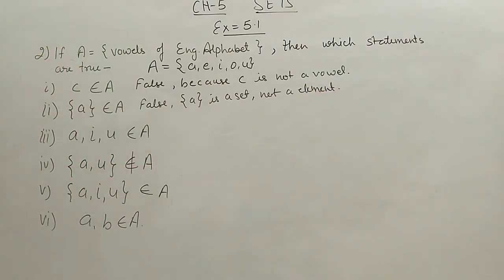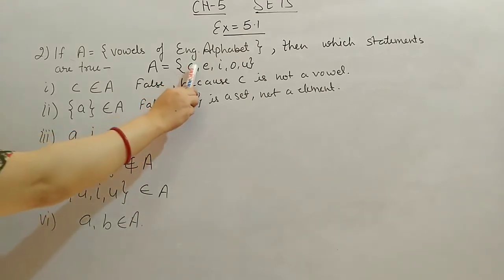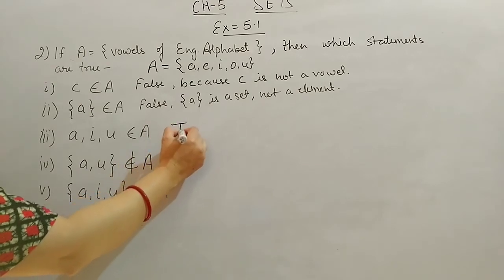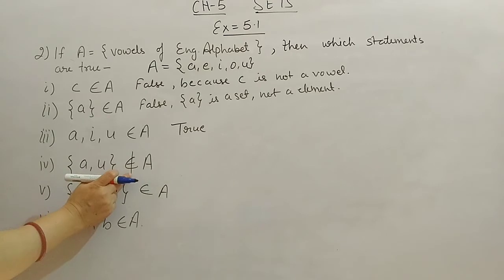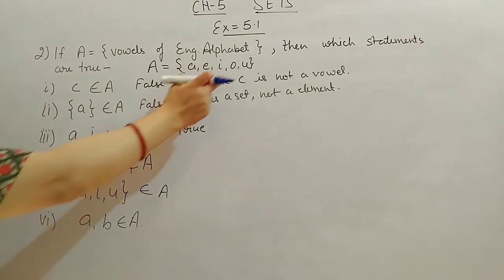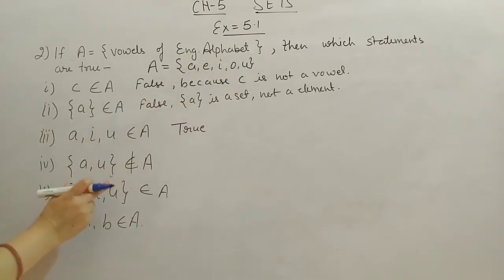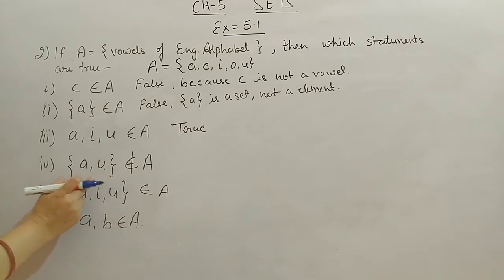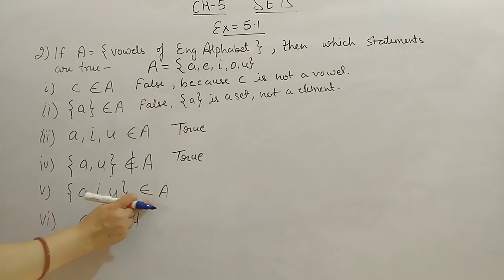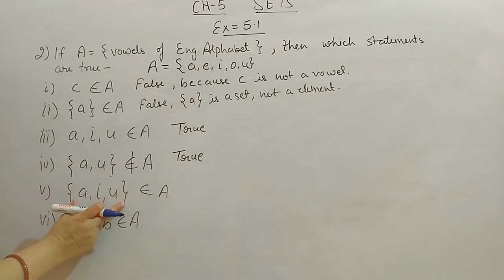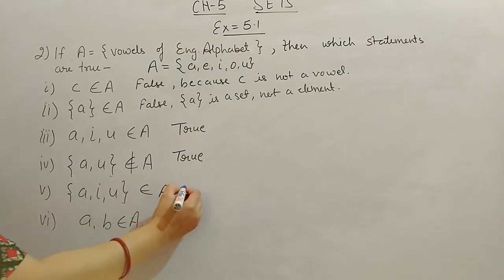Third: A, I, U belongs to A — this statement is true, as all three letters are in the set. Fourth: {A, U} does not belong to A — A and U are there, but not the set {A, U}. This means the set of A and U is not in A, so this statement is true. Fifth: {A, I, U} belongs to A — A, I, U are elements in A, but the set {A, I, U} is not an element of A. So this statement is false; {A, I, U} is a set, not an element.